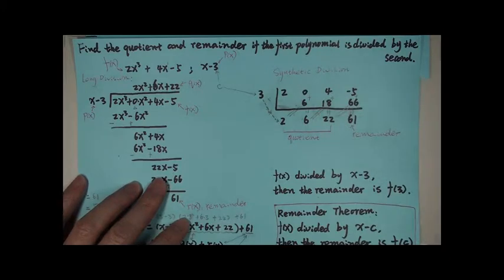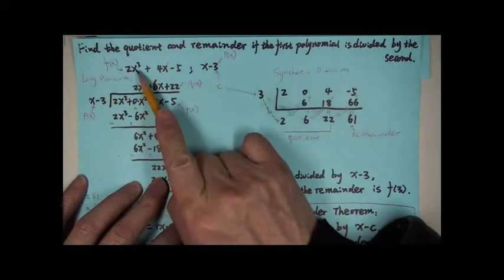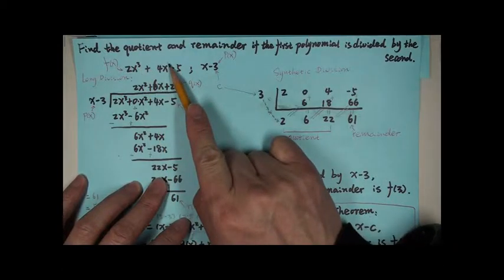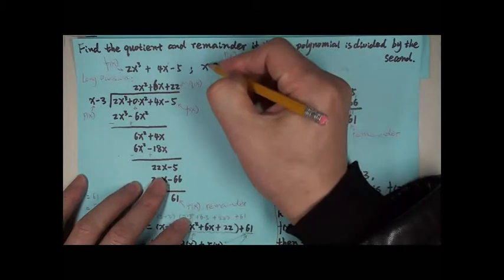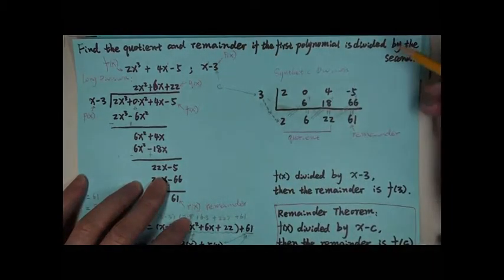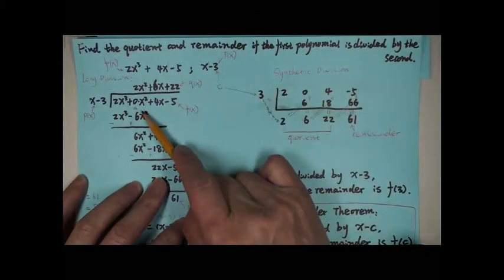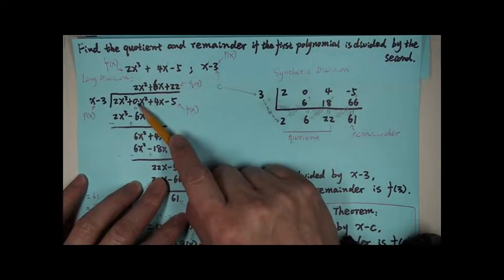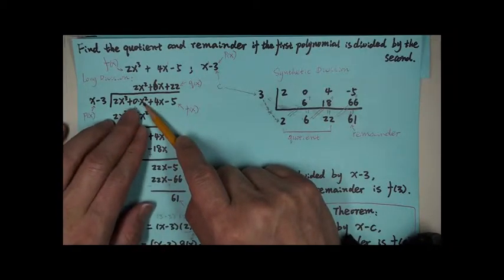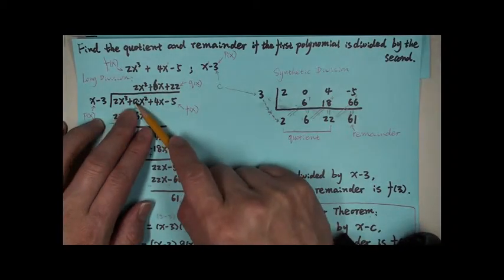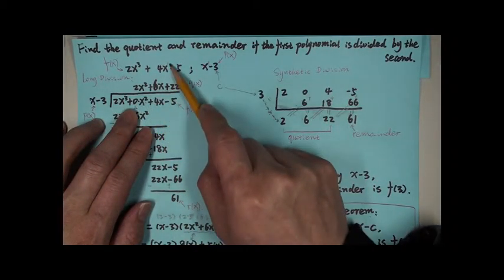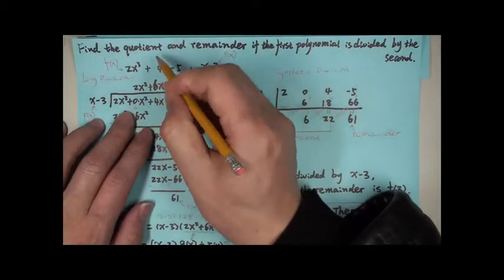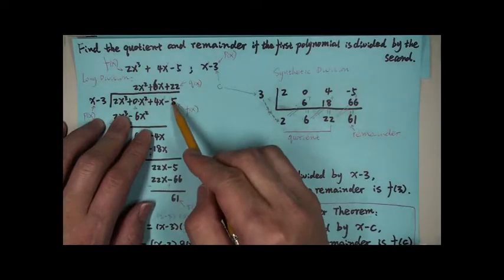Look — the exponent for the first polynomial, the highest one is 3, then it goes to 1. The exponent for x in the divisor is just 1. So when you do the division, x squared is missed. You want to put x squared right here. 0 times x squared is 0, so you want this polynomial to have a spot for x squared. So: 2x cubed plus 0x squared plus 4x, and you can see it's in descending order — 3, 2, 1 — and then negative 5 as a constant.